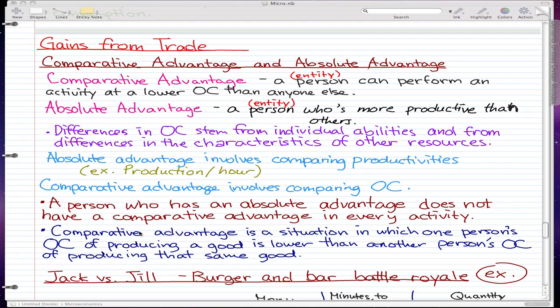Comparative advantage is a situation in which one person's opportunity cost of producing a good is lower than another person's opportunity cost of producing that same good. Again, this doesn't really have to be a person's advantage or opportunity cost—it could be a business, a country, or some kind of similar entity.